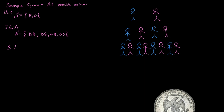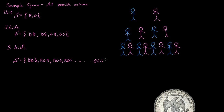Now let's go to three kids. What's the sample space of having three kids? Well, you could have a boy first, then a boy, then a boy — that's one outcome. You could have boy-girl-boy, boy-girl-girl, and it would go on all the way to having a girl, a girl, and a girl.